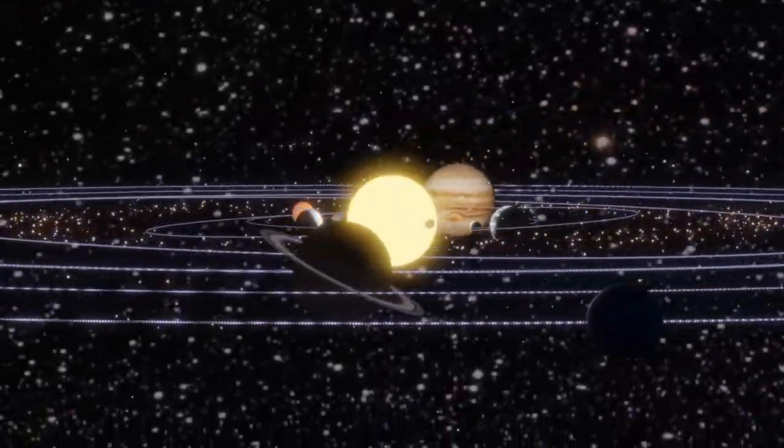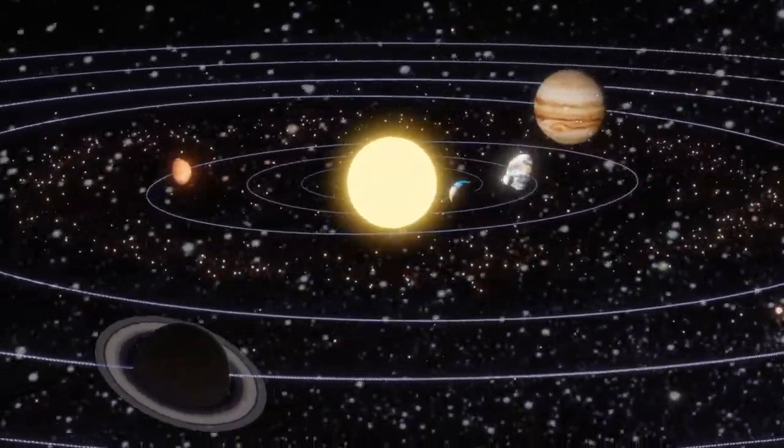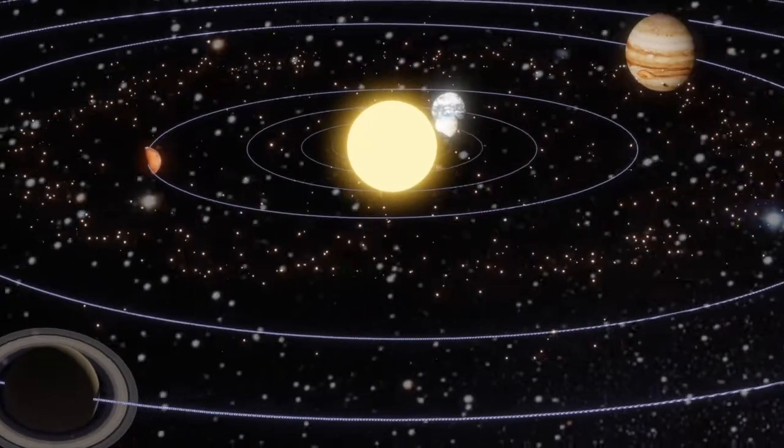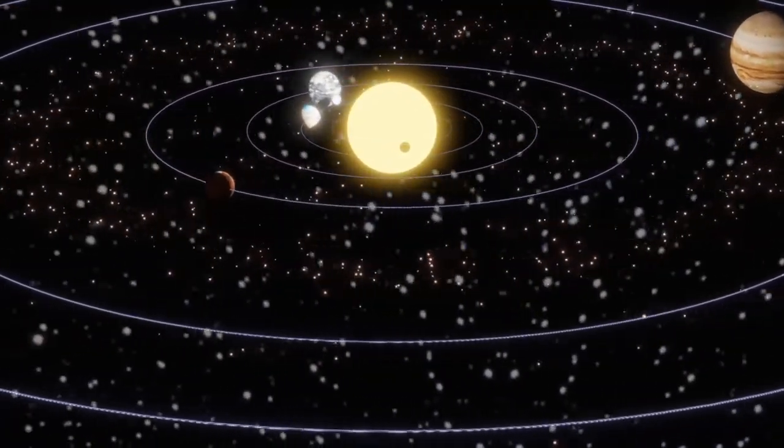All of the planets in our solar system orbit or move in a circle around the sun. This happens because of the sun's gravitational pull. The law of gravity says that smaller objects will be pulled towards larger objects.